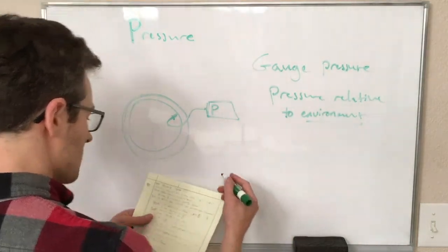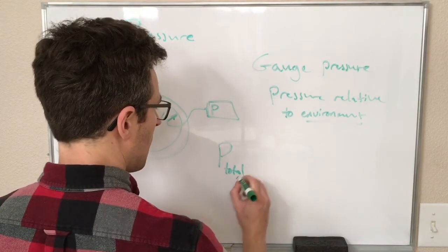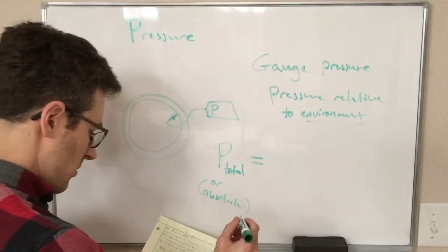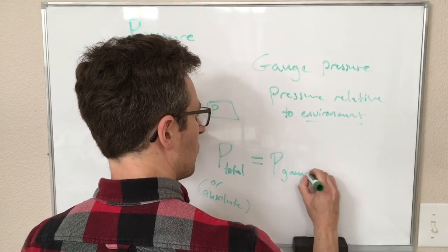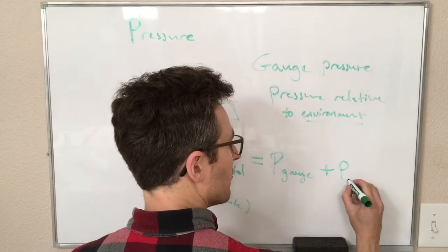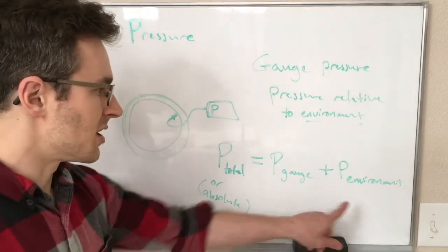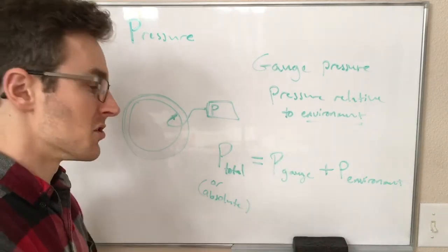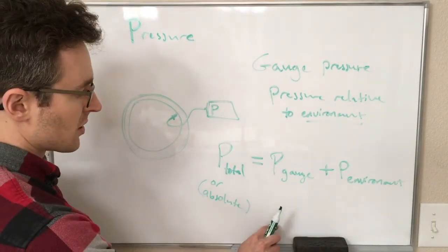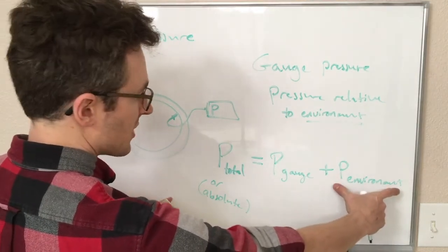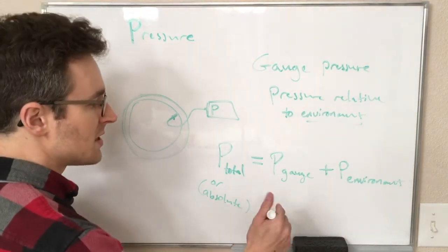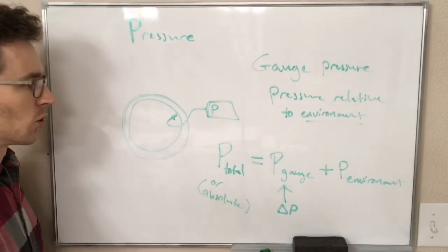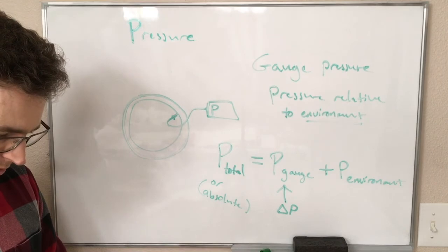The way we write this down in terms of equations is the total pressure—sometimes this is also called the absolute pressure—is equal to the gauge pressure, which is the number that shows up on a pressure gauge, plus the pressure of the environment that the system is in. Most commonly this would be air pressure, and most commonly air pressure is 101.3 kilopascals, but depending on the situation, this could be lots of different numbers. So the gauge pressure here is really like if we imagine subtracting this from both sides, so we have P total minus P environment equals P gauge, you can kind of see that the gauge pressure here is kind of like a delta P, a change in pressure between the environment and the total pressure inside our system.